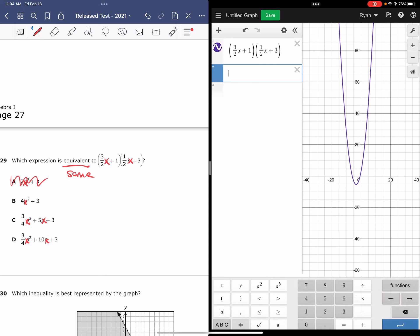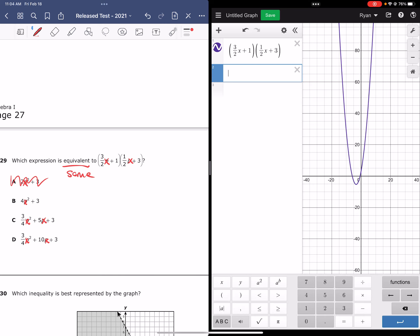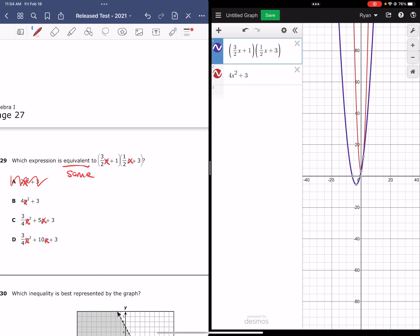We will go back to Desmos and type in the second answer choice, 4x squared plus 3. And again, I notice that I have two different graphs on my viewing window. And so therefore, we know that B is also incorrect.